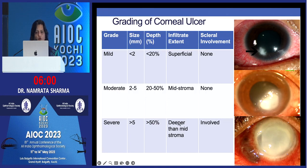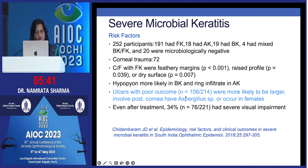It is important to know the size and depth of the ulcer infiltrate extent and scleral involvement — it could be less than 2mm, 2 to 5mm, or more than 5mm — and likewise for depth in percentage and infiltrate extent. This determines what antibiotics you are going to give. Risk factors for severe microbial keratitis with poor outcomes include larger ulcers involving the posterior cornea, Aspergillus species, or occurring in females — this was a study from South India.